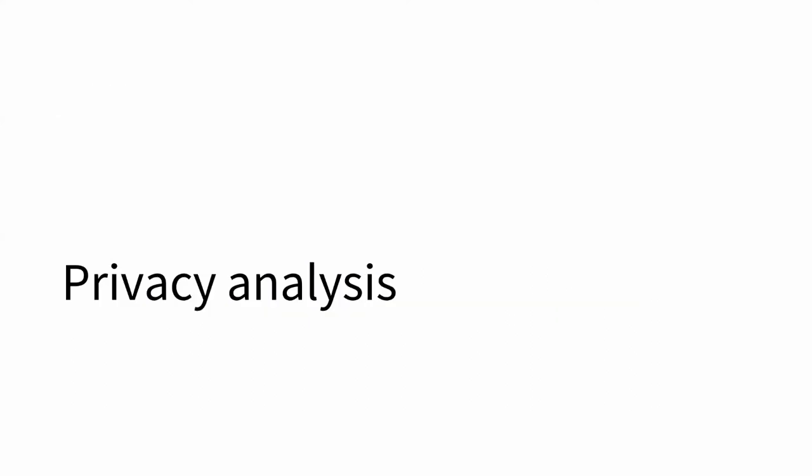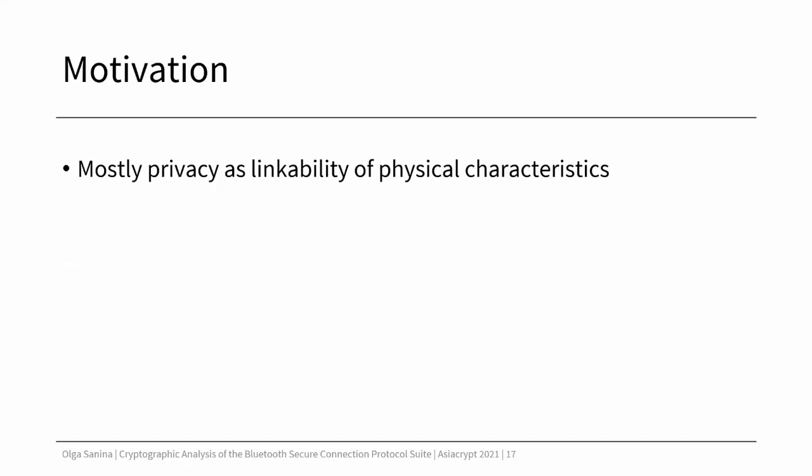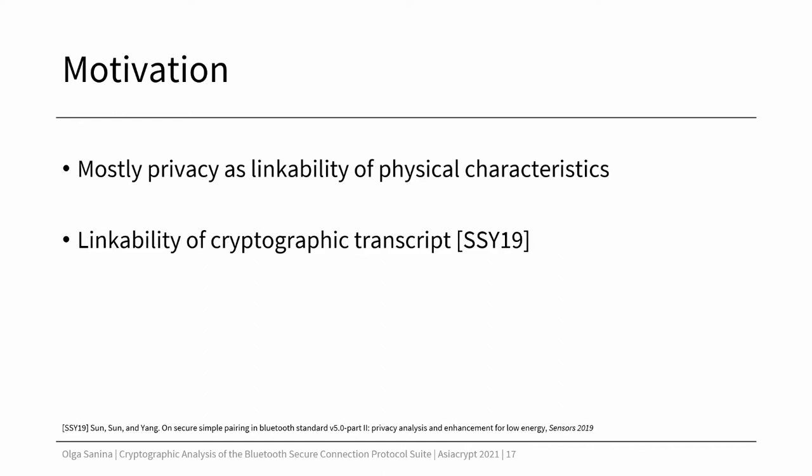Now we can go to another part of the contribution, which is privacy analysis. Prior to this work, most analyses looked into privacy as linkability of the physical characteristics of the devices, such as the strength of the signal. There is a paper by Sun et al. in a Sensor Journal which studied the linkability of the cryptographic transcript in the Bluetooth key exchange protocol. They correctly pointed out that the devices can be easily linked if they use the same Diffie-Hellman share in several connections.